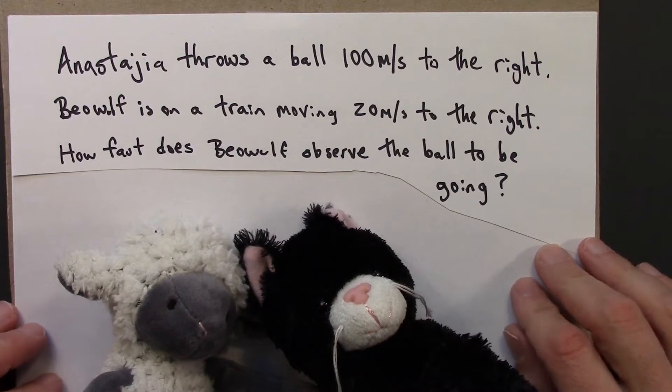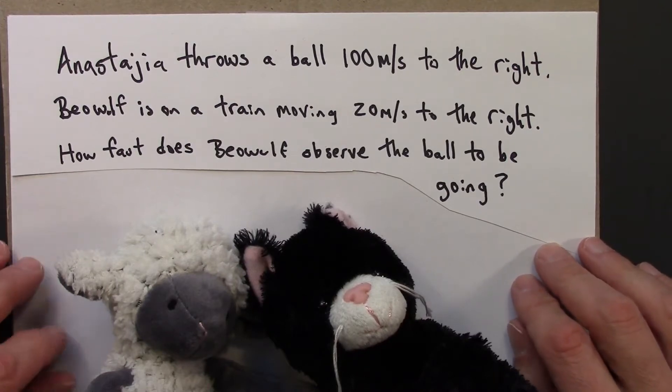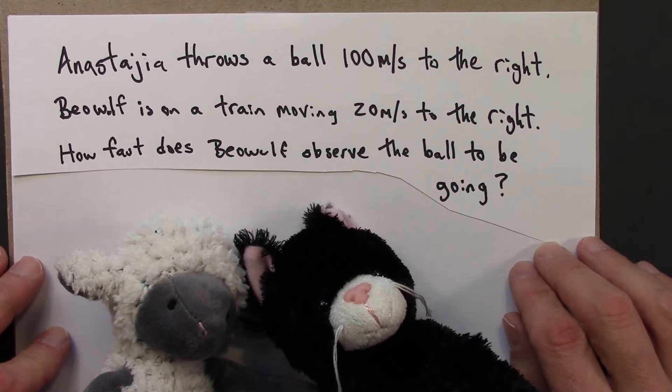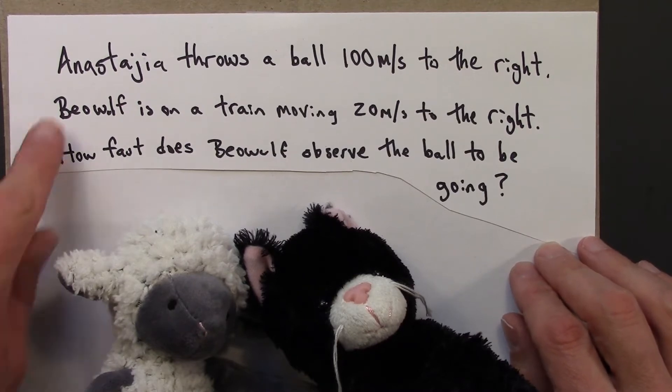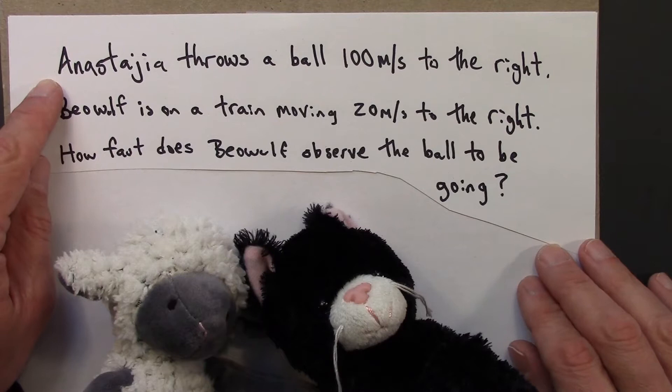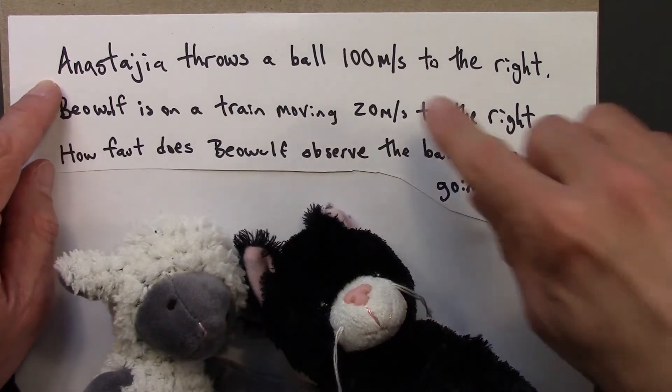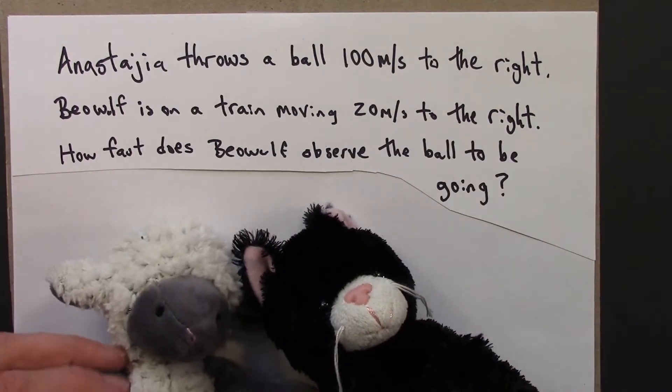Let's do an example so we can see how velocities transform under Galilean relativity. So here's the situation. Anastasia throws a ball 100 meters per second to the right. That's really fast. I guess she's a very good thrower.